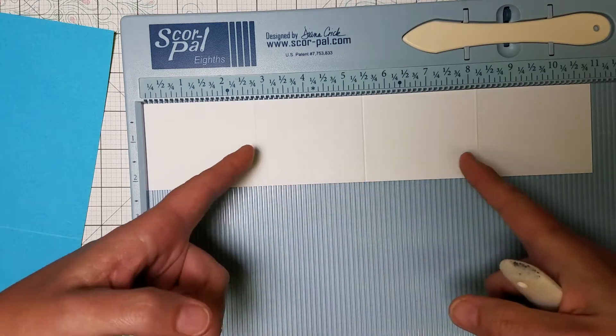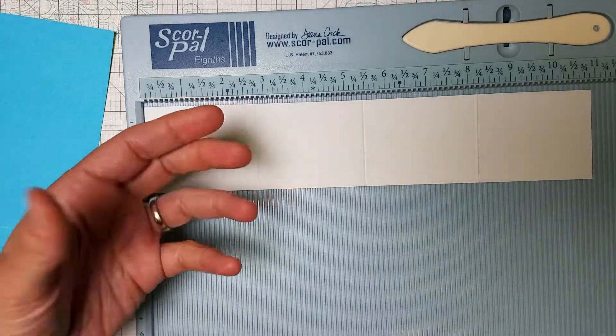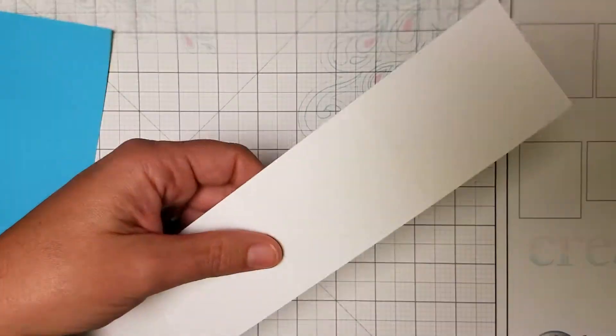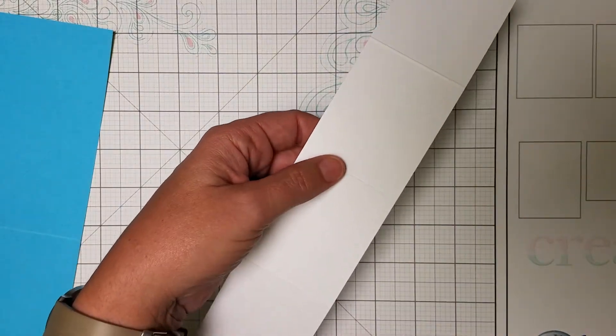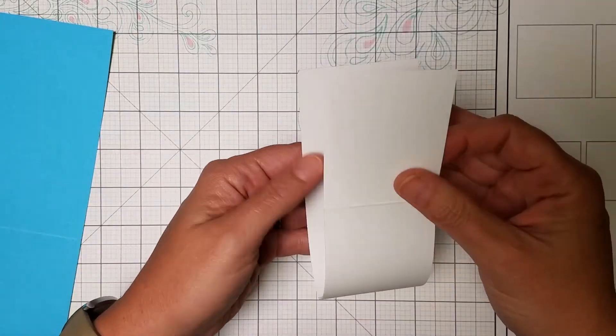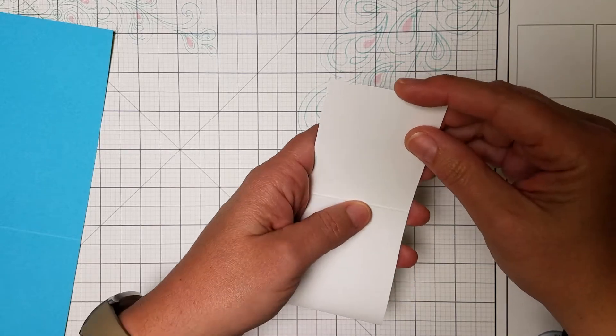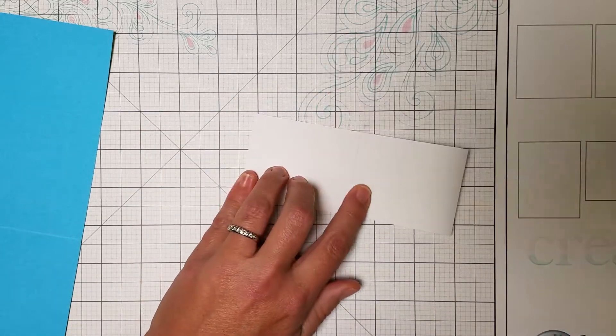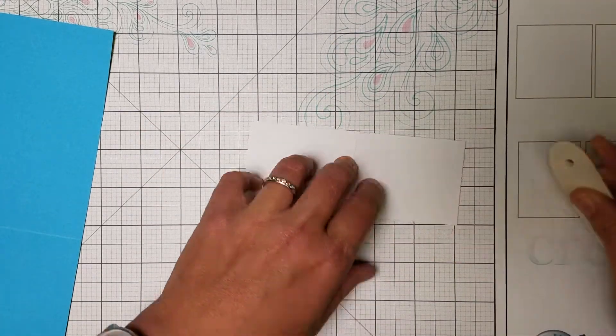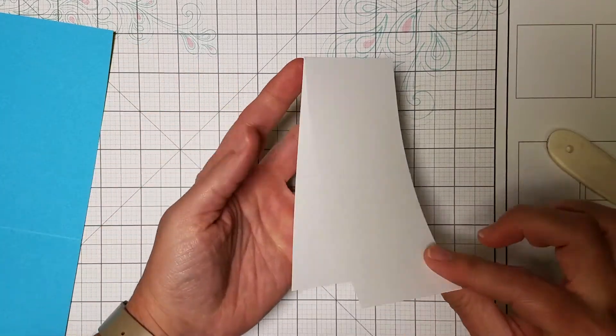All right, I'll set the ScorPal aside and we'll fold this strip as long as we've got it handy. So even though I've scored it, I still will very carefully align the little edges there and make my center fold first.